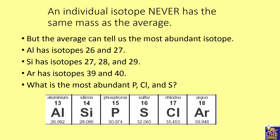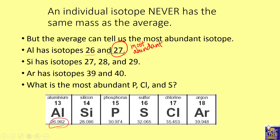Looking at aluminum on the periodic table, it probably has isotopes with mass numbers 26 and 27. Since the average atomic mass rounds up to 27, aluminum-27 is probably the most abundant isotope. Silicon has three isotopes — silicon-28, silicon-29, and silicon-30 — and its average is closest to 28, making silicon-28 likely most common. Argon's average atomic mass is 39.948, so argon-40 is probably most abundant.